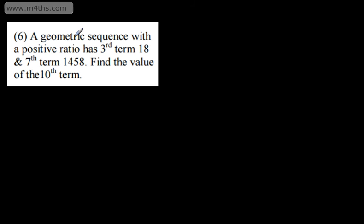In question 6, we're told a geometric sequence with a positive ratio has 3rd term 18 and 7th term 1458. We're asked to find the value of the 10th term. This is similar to a question we looked at in the last video. We write out an expression for the 3rd and 7th term, set up and solve simultaneous equations, and then plug back in to the formula.